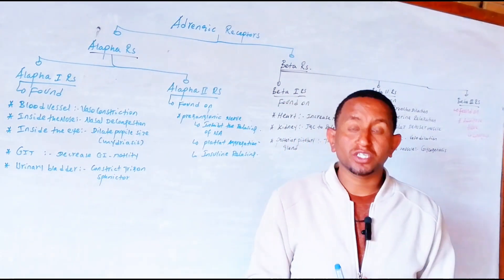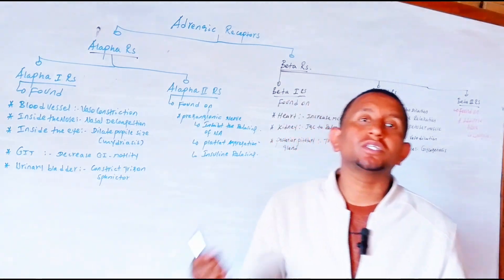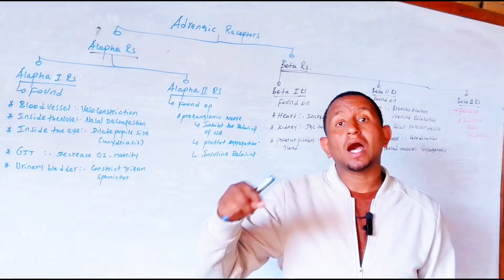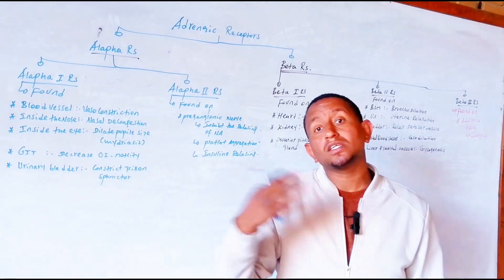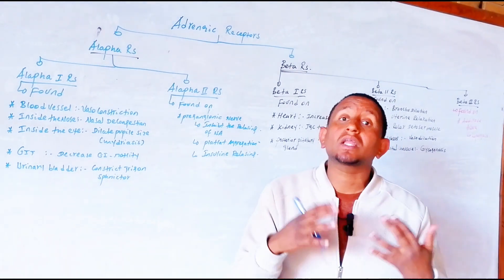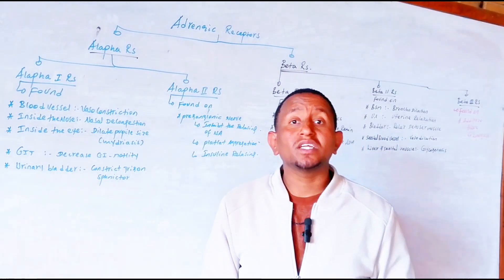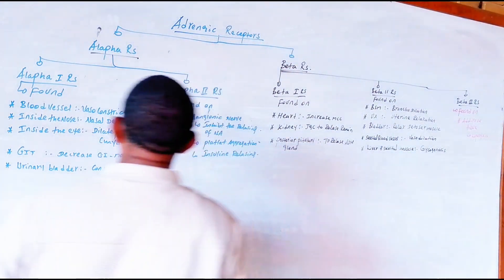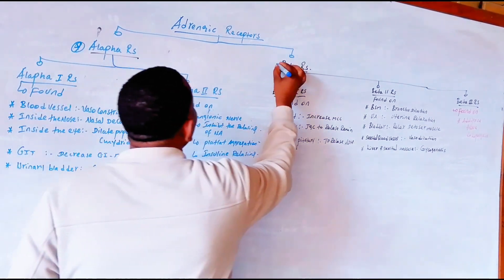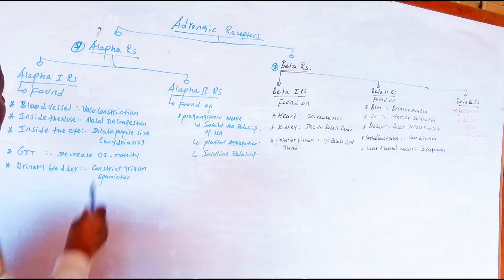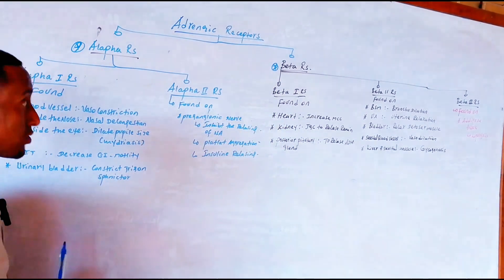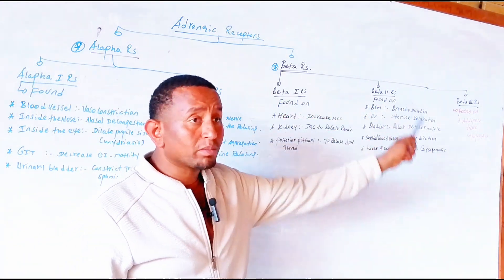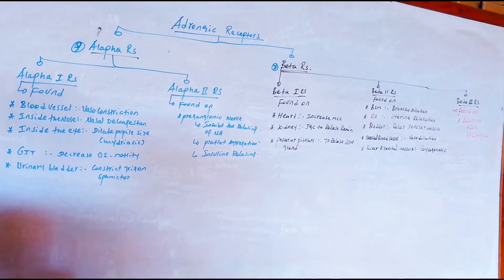Where is the location of the Adrenergic Receptor? Adrenergic Receptor can be classified into Alpha Receptor and Beta Receptor. The Alpha Receptor is divided into Alpha 1 and Alpha 2. The Beta Receptor is divided into Beta 1, Beta 2, and Beta 3.